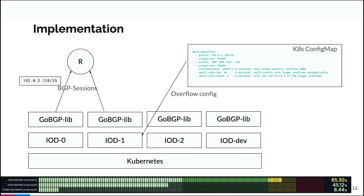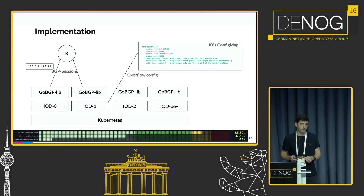The implementation is straightforward. It runs on Kubernetes on-premise in multiple instances for redundancy and updateability. We are using the GoBGP library for this, and the config is done via config maps that are hot-reloadable.